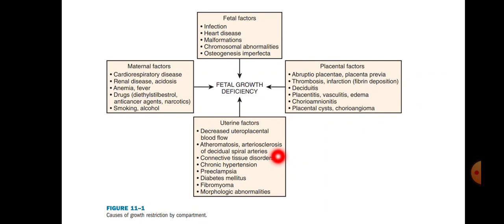Uterine factors such as connective tissue disorders, chronic hypertension, and preeclampsia all involve endothelial dysfunction, which causes oxidative stress and vasospasm. Initially this vasospasm is localized and focal, but if it persists, endothelial damage becomes widespread, causing profound fetal hypoxia. In placental factors, microthrombi are formed which affect fetal growth, not allowing the baby to reach its genetic potential.